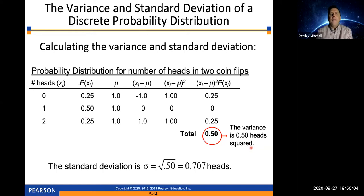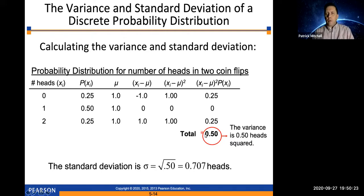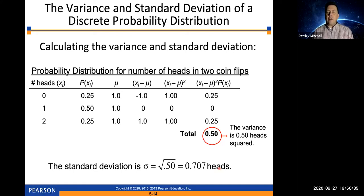The main reason we use the standard deviation instead of the variance most of the time is that the standard deviation is measured in the same units as the original data — in this case, the original random variable. When you take the square root of 0.5, you get 0.707. So the standard deviation for this random variable is 0.707 heads.